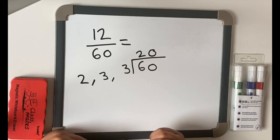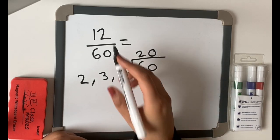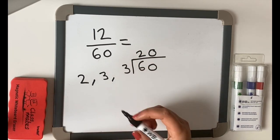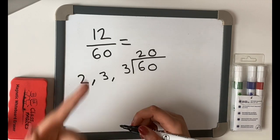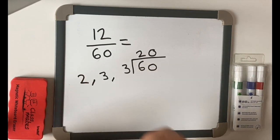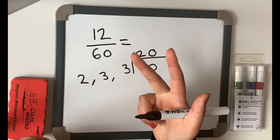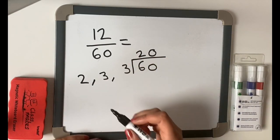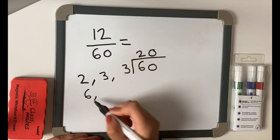But what about the timetable 6? Will 6 go into 12? Yes, 6, 12. Will 6 go into 60? Let's have a go. 6, 12, 18, 24, 30, 36, 42, 48, 54, 60. Yes, it does. It goes into it 10 times. So let's have a look at number 6.